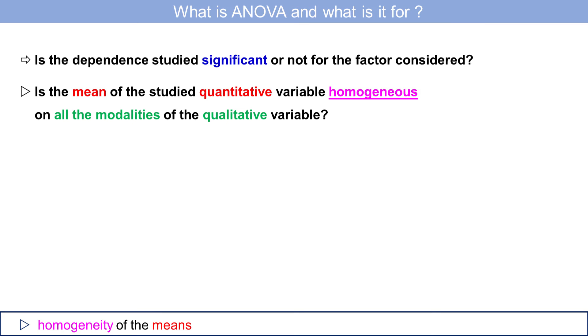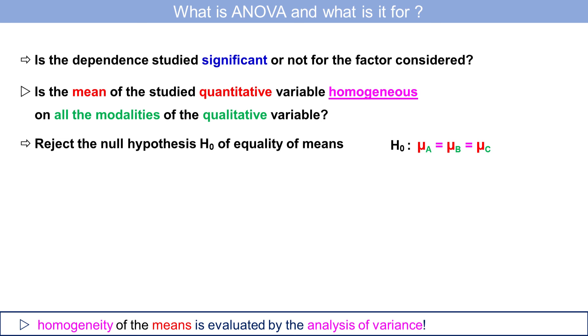What we'd like to show is whether one or two qualitative variables affect the quantitative variable. The aim is thus to reject the null hypothesis H₀ of equality of all the means by analyzing the variance. The hypothesis test performed is a Fisher-F test.